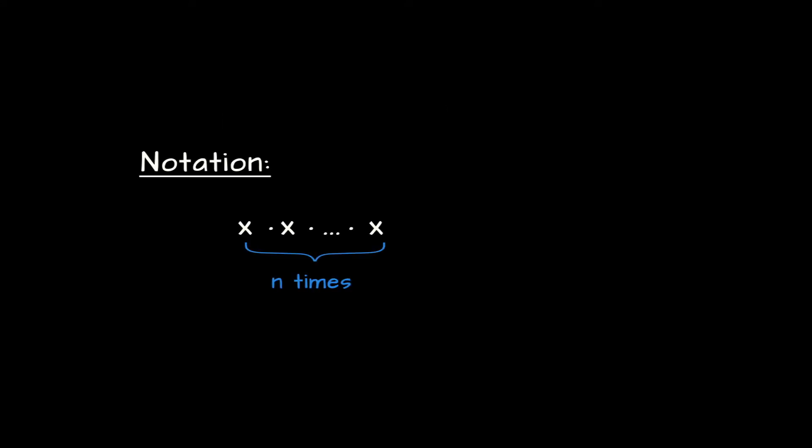In general, the notation works like this: if we take some arbitrary real number x and choose to multiply it by itself n times, then we write the result as x raised to the power n. The number n is known as the exponent — hence exponential notation — and the number x is what we call the base of the exponential expression.